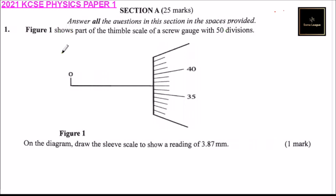Question number one: Figure 1 shows part of the thimble scale of a screw gauge with 50 divisions. We have the diagram. On the diagram, draw the sleeve scale to show the reading of 3.87 mm.